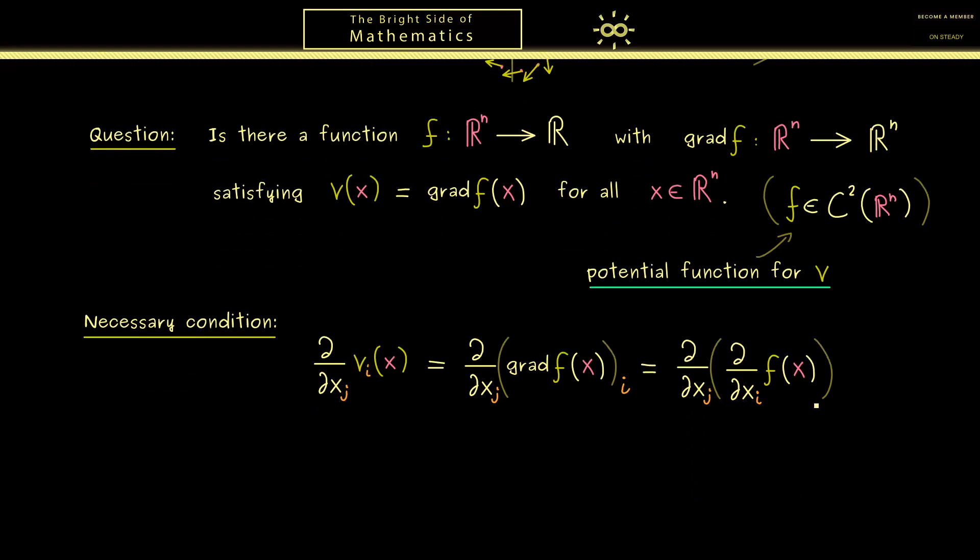Hence, what we have now is first the partial derivative with respect to x_i and then with respect to x_j. Then, as you might already see, we can reformulate that with a gradient. Of course, it's the same as before but with exchanged indices.